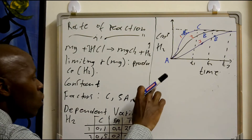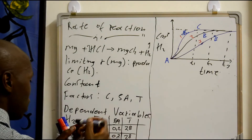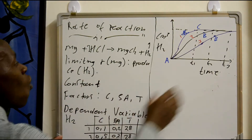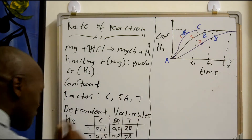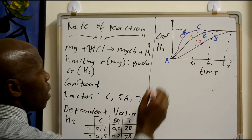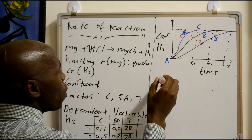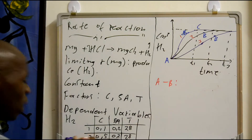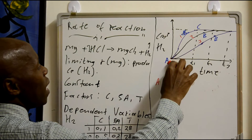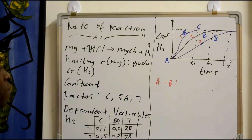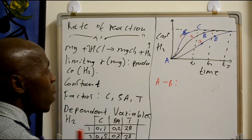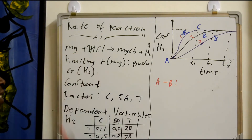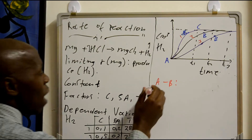Now please note what I am saying. Let's analyze these points. From A to B — what is happening from point A to B? If we consider concentration: from point A to B, the magnesium and hydrochloric acid concentration is high.